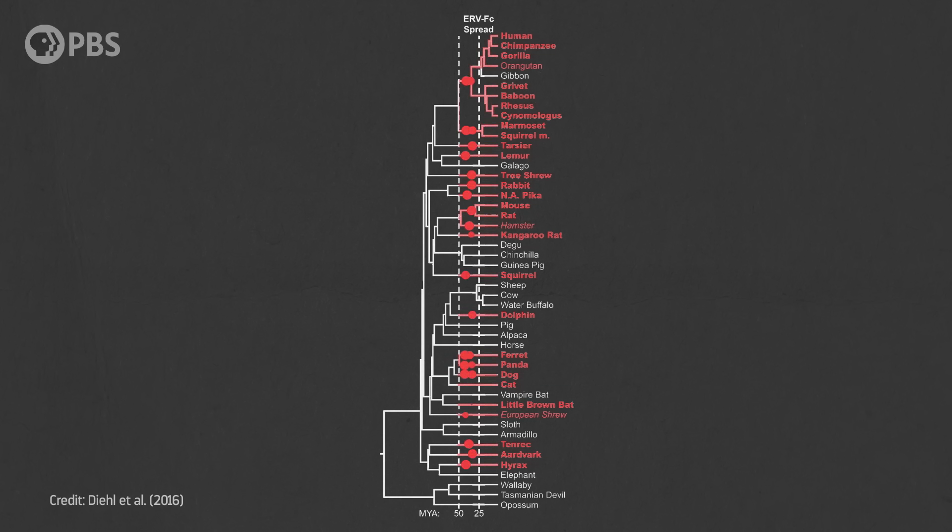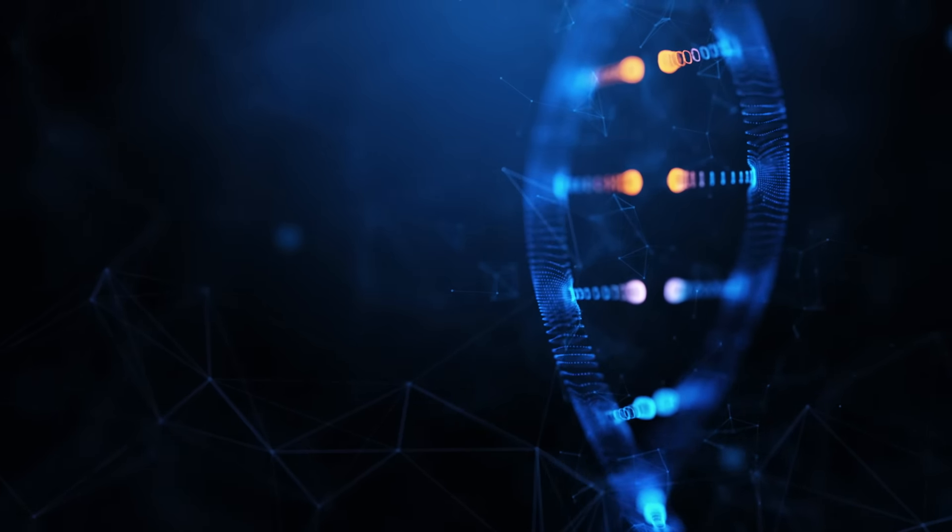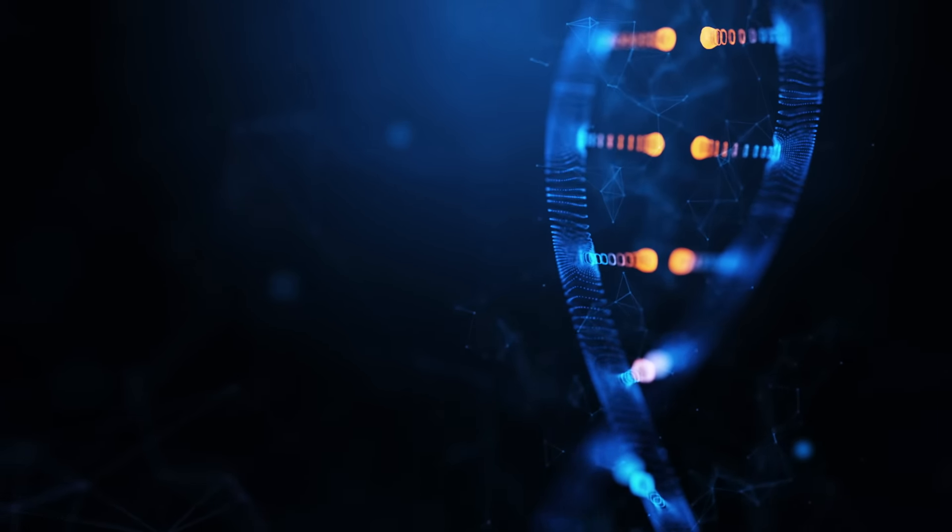In this case, the answer turned out to be no. It's a little more complicated than that. Instead of one infection event, it looks like this virus independently infected different mammal species and embedded itself in their genomes multiple times. For example, 12 of the mammals studied, including humans, pandas, and dogs, all have more than one genetically distinct sequence of ERV-FC in their genomes. This suggests that there were many independent infection events by different strains of the virus as it evolved while spreading around the world.